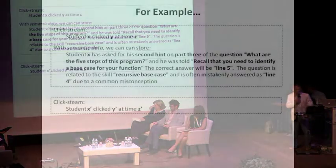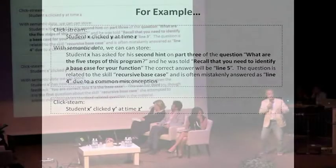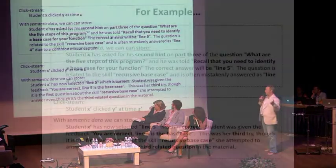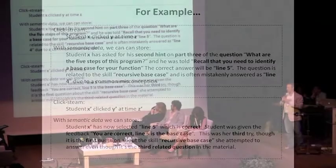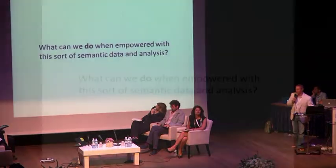That student proceeds with clickstream data, and we learn again that student X clicked Y at time Z. Whereas with semantic data, we can capture and store that student X has now moved on, and they've selected line five, which is correct. They were given this feedback. You're correct. Line five is the base case. This was our third try, though. It's the first question about this particular skill, and it's the third related question in the material. So we have a lot of information if we design online content and online environments intentionally.